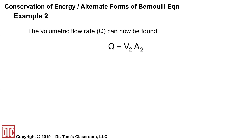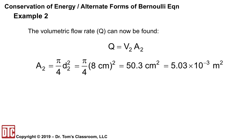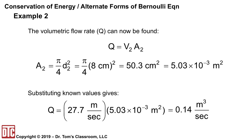Finding the volumetric flow rate: Q equals v2 times A2. The area at the eight-centimeter converging section is converted from centimeters squared to meters squared. Multiplying by the velocity gives Q approximately 0.41 cubic meters per second. We wouldn't convert this to liters per minute since we're dealing with air.